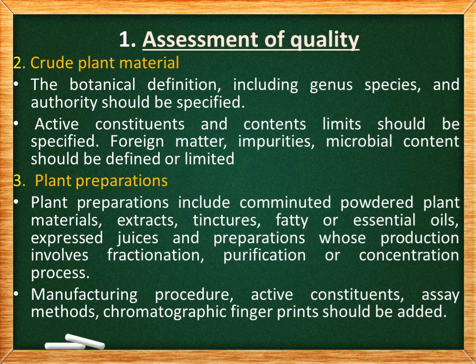The second element is crude plant material. The botanical definition, including genus, species, and authority, should be specified. The active constituents and the content limits should be specified. Foreign matter, impurities, and microbial content should be defined or limited.